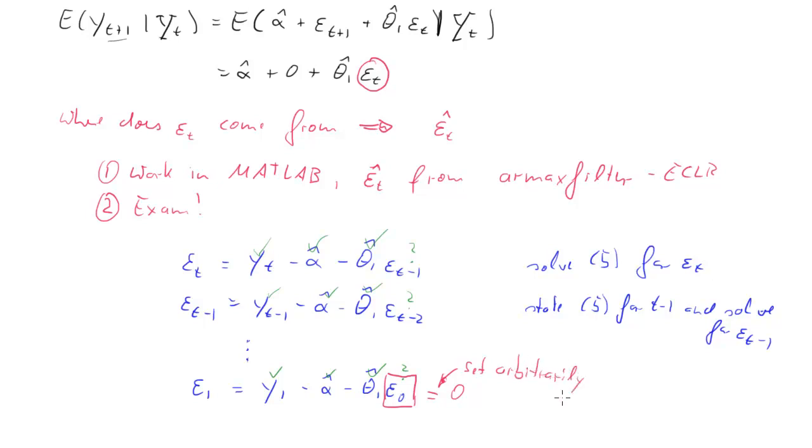And if you have a stationary process, it shouldn't really matter what you really set it to, but you want to set it to a reasonable value. On average, our error terms are zero, so we'll set it to the average value. Now, once you have this, once you set this to zero, you can calculate epsilon_1—that will be epsilon_1 hat.